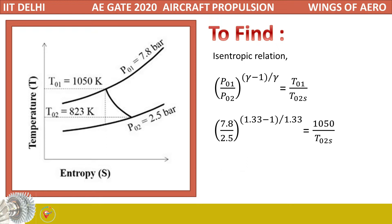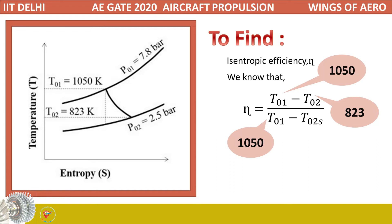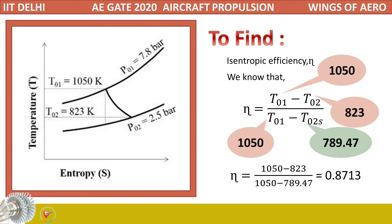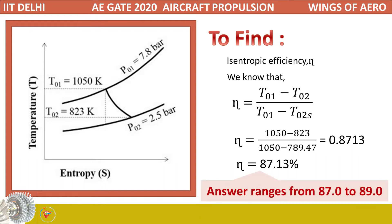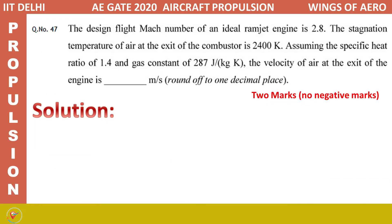From this relation we find T02s = 789.47 K. Substituting back into the isentropic efficiency formula, we get 0.8713, which is 87.13% rounded to two decimal places. Based on the IIT Delhi answer key, the answer ranges from 87 to 89, so this is within the acceptable limit.